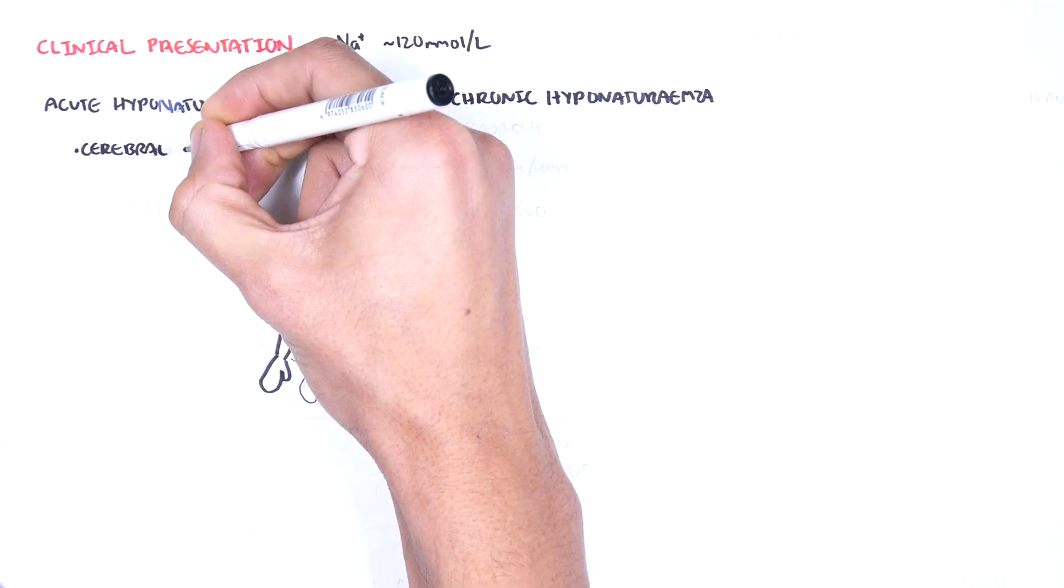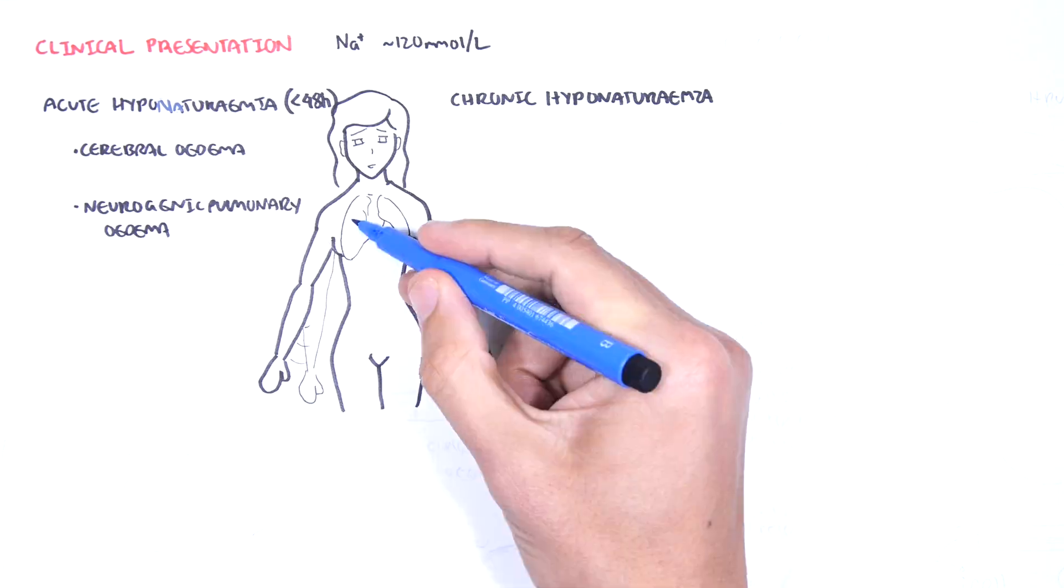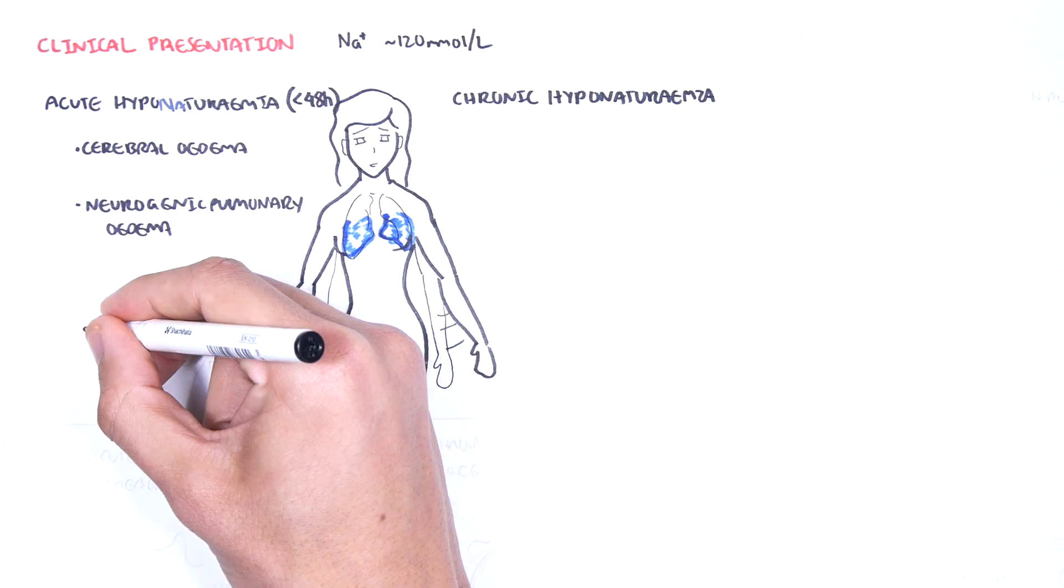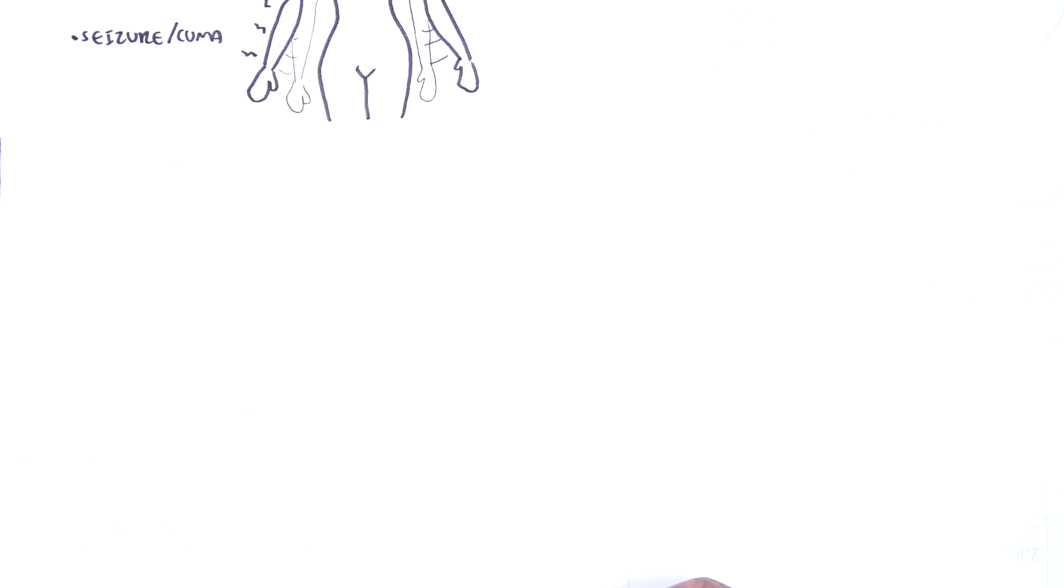Acute hyponatremia is dangerous because it can cause cerebral edema, neurogenic pulmonary edema, seizures, and even coma. The mechanism of edema in acute hyponatremia can be explained here.